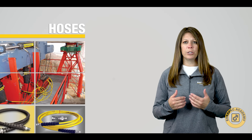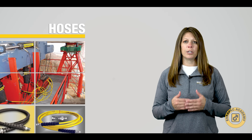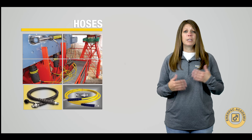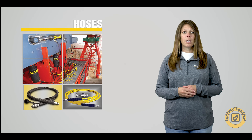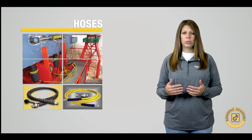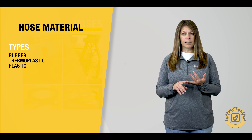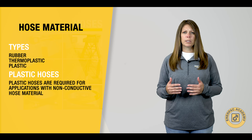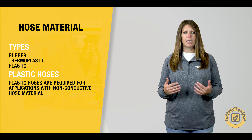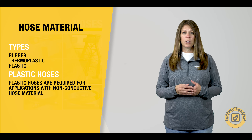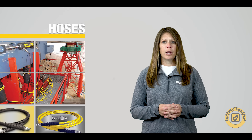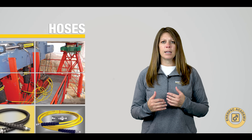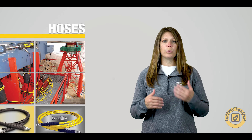Let's start with some common terms used when working with industrial high-pressure hydraulic hoses. Materials are the first consideration when selecting an industrial high-pressure hose. There are three basic hose materials to consider: rubber, thermoplastic, and plastic. Plastic hoses are required for applications specifying non-conductive hose material. For this series, we will focus on only the rubber and thermoplastic hose materials. There are differences in the operating characteristics depending on the material, which we will cover in the next video.